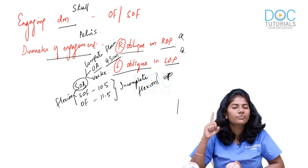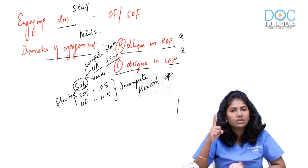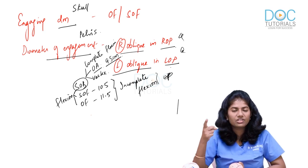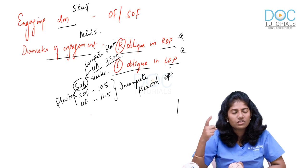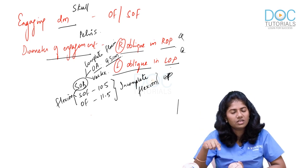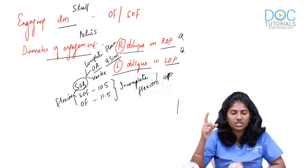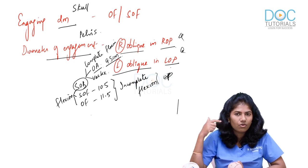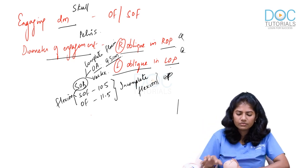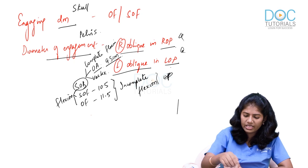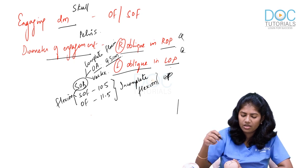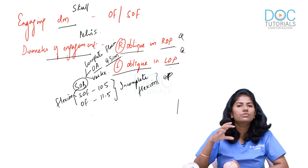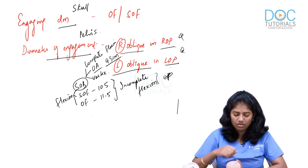To summarize: in occipito-anterior it is suboccipitobregmatic, complete flexion, 9.5 cm. In occipito-posterior it is incomplete flexion — SOF or OF — 10.5 or 11.5 cm. That covers engaging diameter and diameter of engagement.